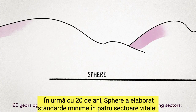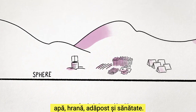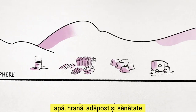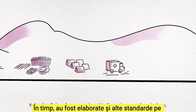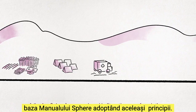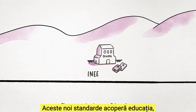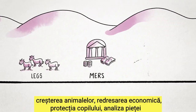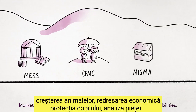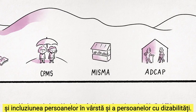Twenty years ago, Sphere developed minimum standards in four life-saving sectors: water, food, shelter, and health. Over time, more standards have been developed following Sphere's approach and built on the same foundations. These standards cover education, livestock, economic recovery, child protection, market analysis, and inclusion of older people and people with disabilities.